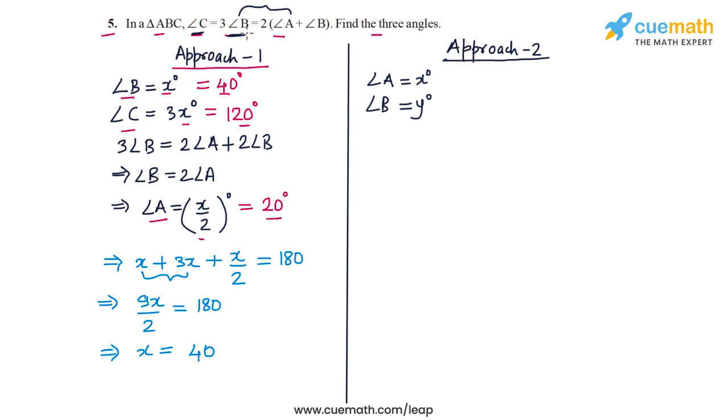So if I compare this equality, three angle B equal to two angle A plus angle B, I can write this as three Y is equal to two times x plus y. So if I expand this, I get three Y is equal to two X plus two Y. And this I can write as two X minus Y is equal to zero. So this is the first equation that we get in x and y.